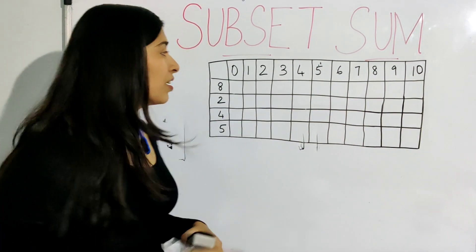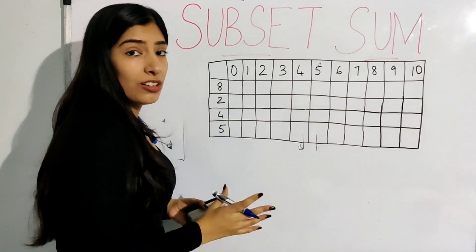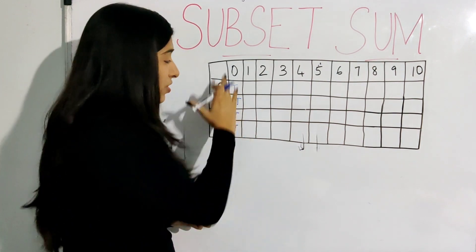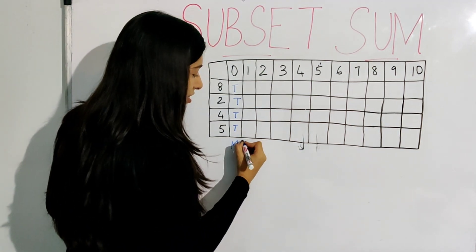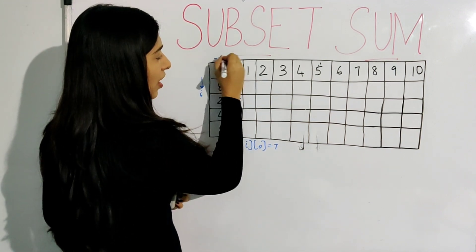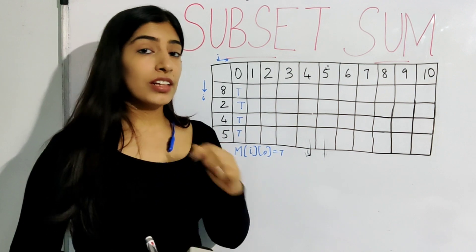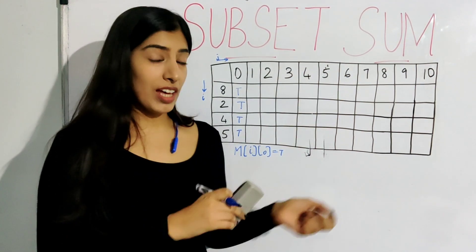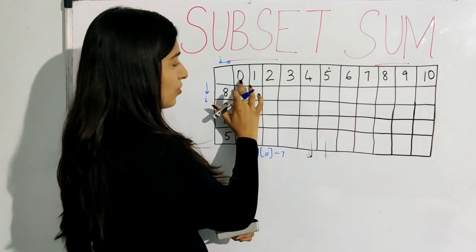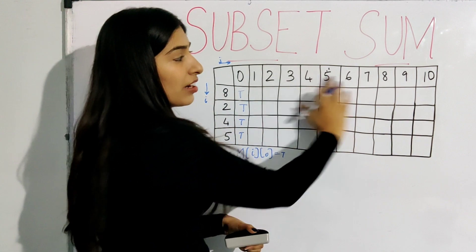Let's start with the initial conditions. What if the sum is 0? It doesn't matter — we can exclude all elements and the answer will always be true. If we have to find the sum 0, we don't need any elements. So M[i][0] is always true, where i traverses the rows and j traverses the columns. That is our first initial condition. But what about the initial condition for the first row? One approach is to add an extra row denoting an empty subset — only the first element (sum=0) would be true and the rest false.